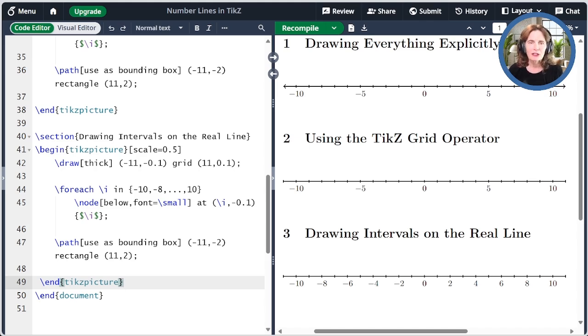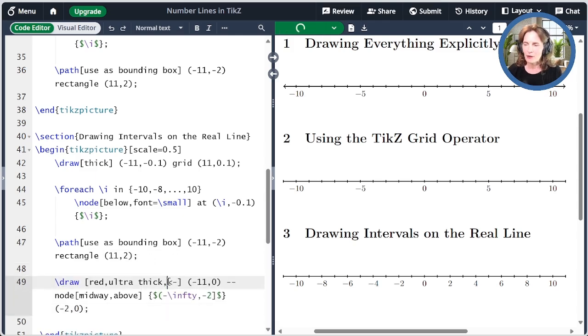Suppose I wanted to draw the closed interval minus infinity to minus 2. I'll draw a red line that's ultra-thick, and I'll have an arrow, which I indicate by this less than sign dash. By putting red by itself at the front, I've told that everything should be red, including the text, which is the node that we draw midway here from minus infinity to 2. We're saying in math what we did.